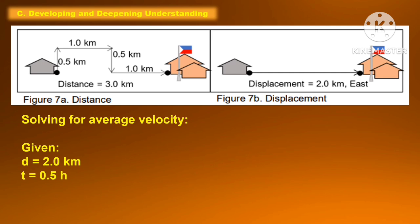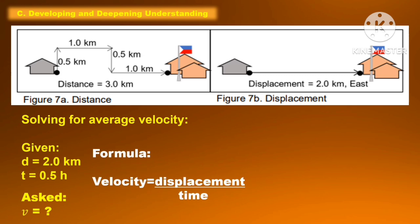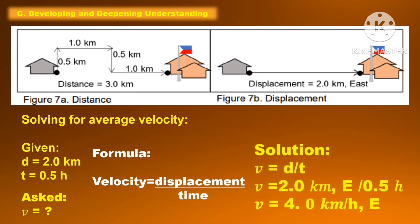Now let us solve for the average velocity. The formula is: average velocity equals displacement divided by time. The given is displacement equal to 2.0 km east and time equal to 0.5 hour. So V equals 2.0 km east divided by 0.5 hour. The average velocity is equal to 4 km per hour east.